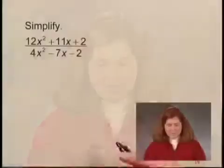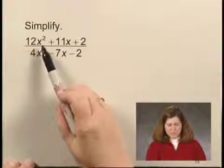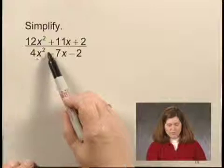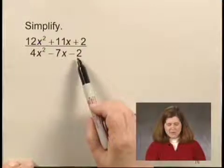We'll now simplify a rational expression. The expression we'll simplify is 12x squared plus 11x plus 2 over 4x squared minus 7x minus 2.